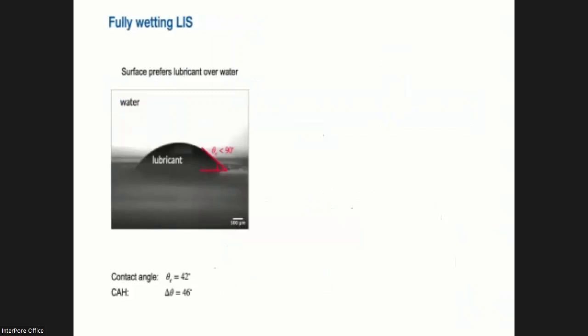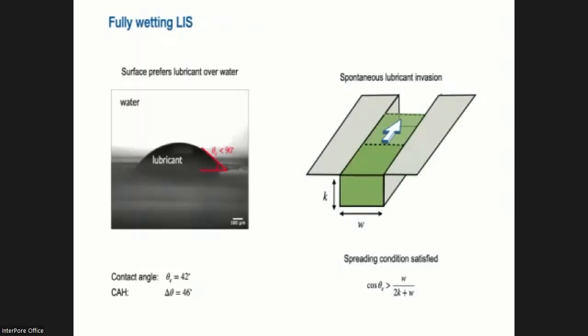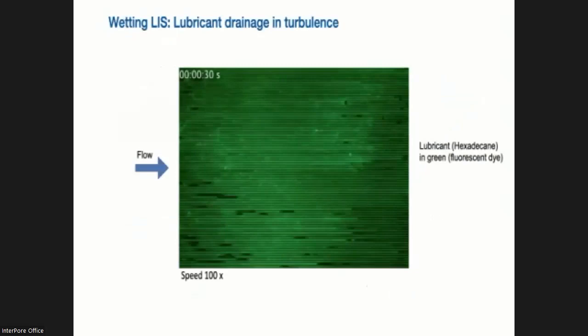Now, I should say a little bit more about the surface. So we treated the surface such that the lubricant wets the surface in the presence of water. So the contact angle is less than 90 degrees, and we have also contact angle hysteresis around 46 degrees. And so the surface prefers the lubricant over the water. And of course, for this chemistry, if you put this lubricant in a groove, it will spontaneously invade the groove. So there's an inhibition here. That's because the spreading condition is satisfied here. So it will be a spontaneous invasion.